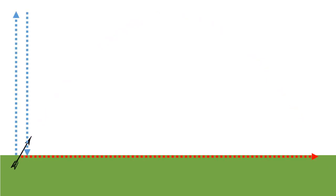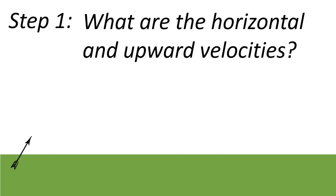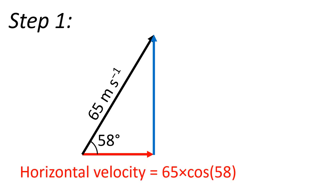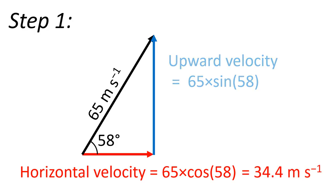So the first thing we're going to do is look at the motion going up, then think about it coming down, and finally look at it going across. Step one: what are the horizontal and upward velocities of the arrow? If we look at this arrow and think about it as a vector velocity of 65 meters per second, we can draw a right angle triangle and resolve the velocities using trigonometry. The horizontal velocity equals 65 times cos 58. We can also get the upward velocity by using 65 times sin 58.